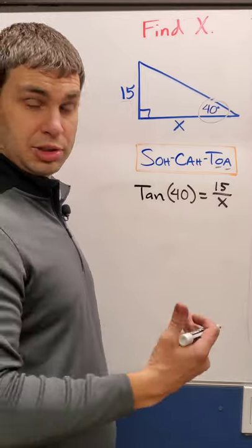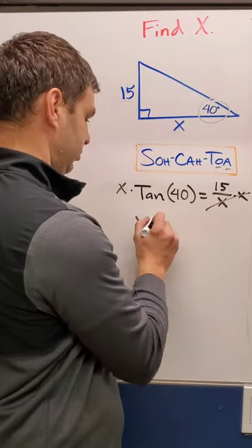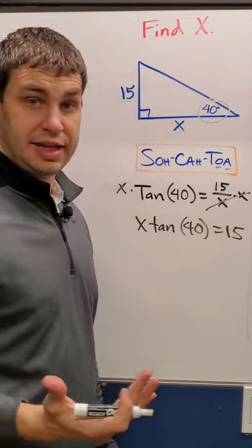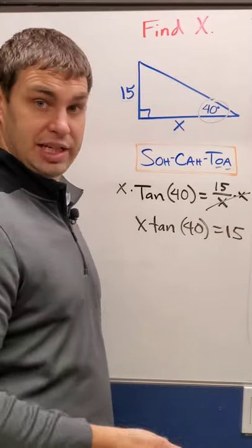And then to solve for X, multiply always by what's in the denominator. In this case, to isolate the X, we have to now divide both sides by tangent of 40.